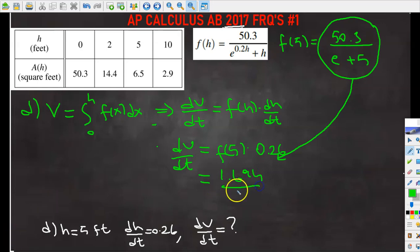Alright, we got the answer. So we are also being asked to write down the meaning of this answer, which is when height is 5, the volume of the water is changing at a rate of 1.694 cubic feet per minute.